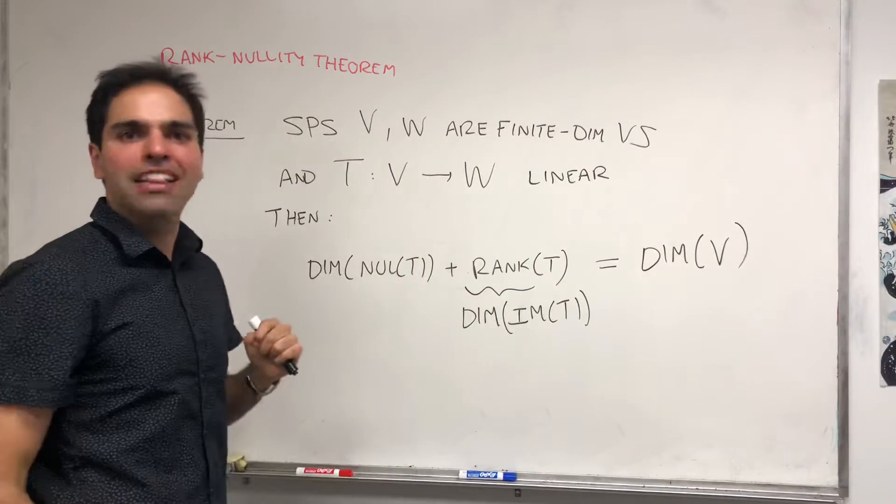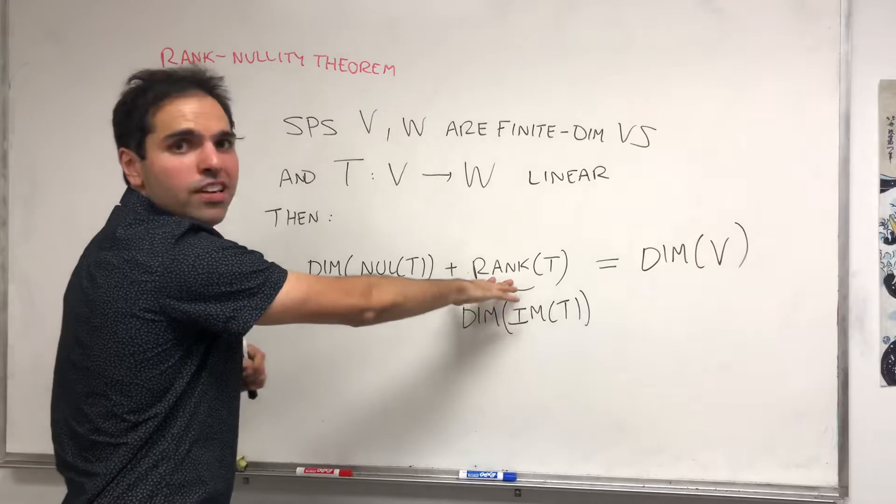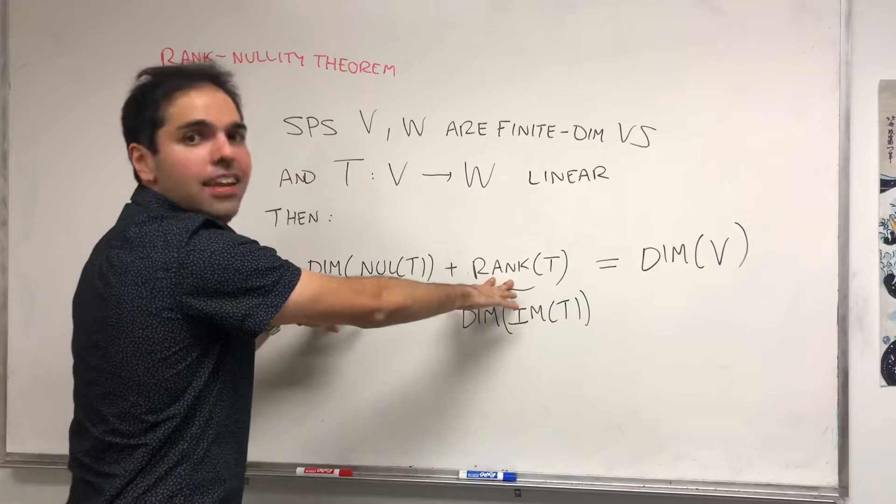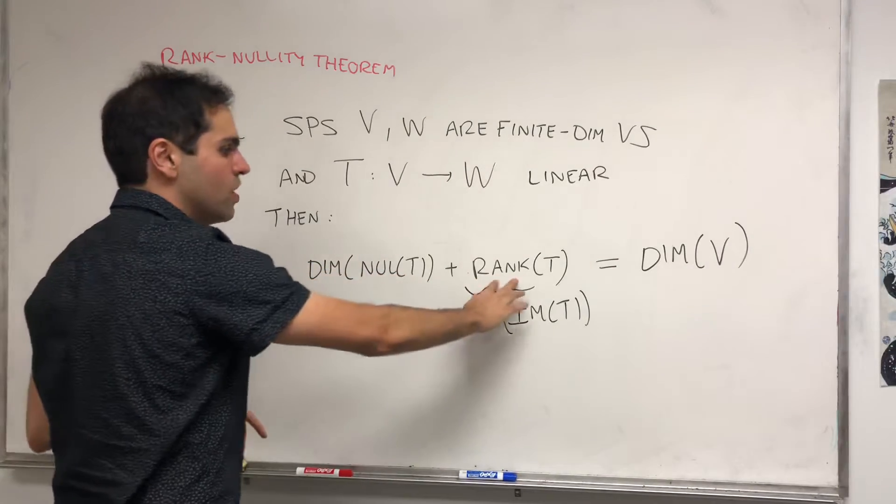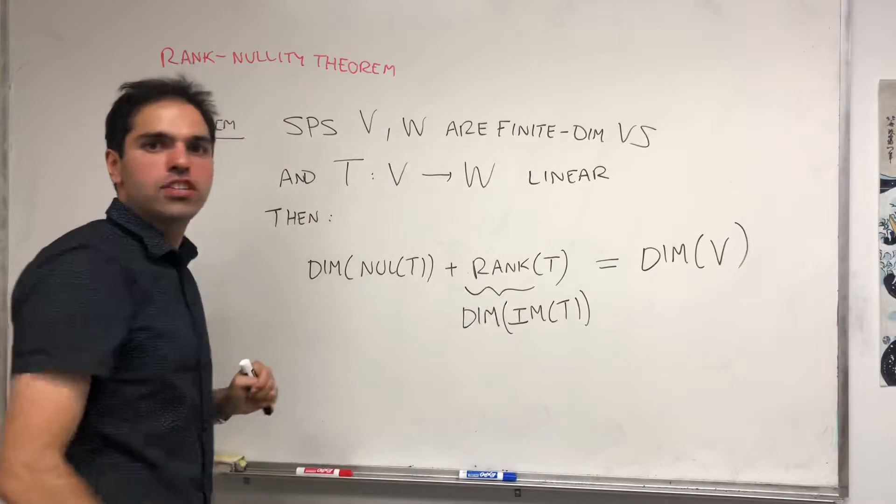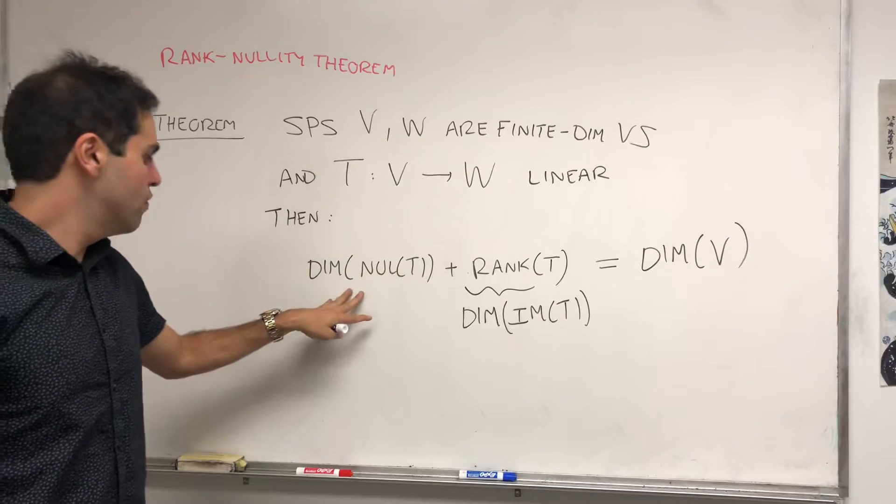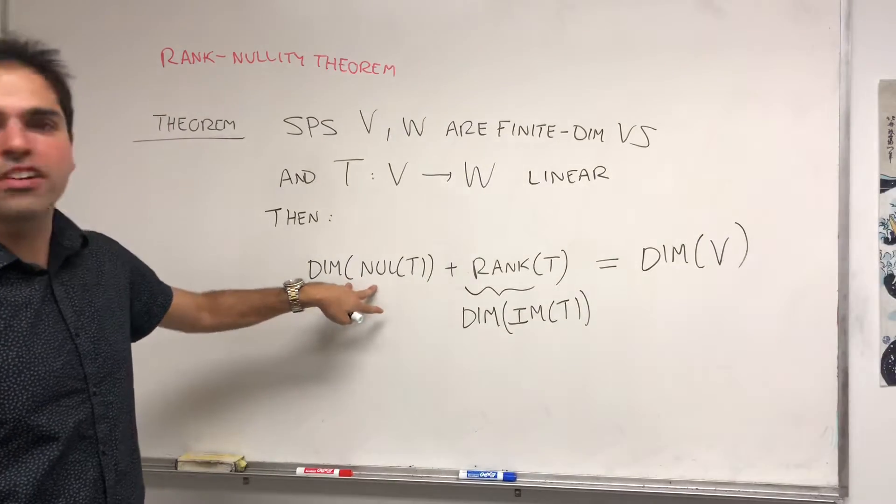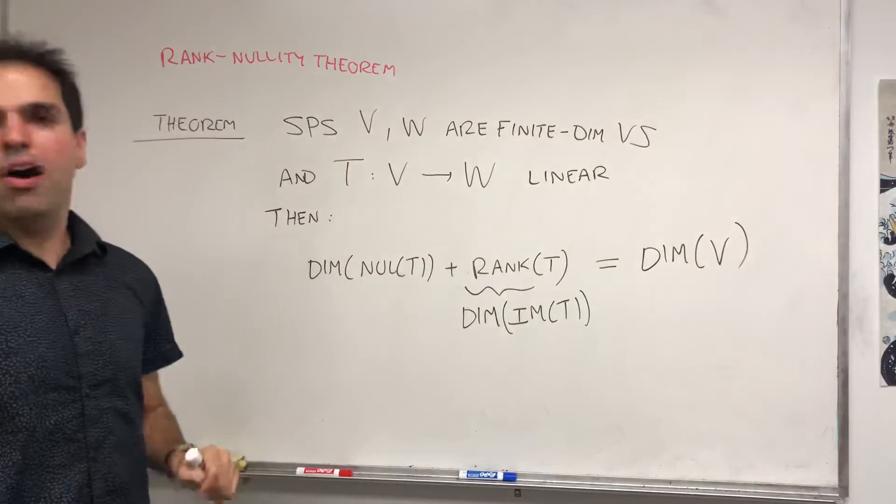This says that they balance out. The better a linear transformation, the less worse it is. So the higher the dimension of the image, the lower the dimension of the null space of T. Conversely, the bigger the null space of T, the smaller its image.